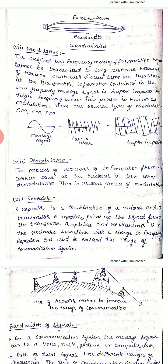The next point is modulation. The reason modulation is needed is that the original signal has quite low frequency and cannot travel long distances. The original low-frequency message or information signal cannot be transmitted over a long distance. For instance, the frequency of a human voice is 20 to 20,000 Hz, but after some distance, the signal loses its strength and amplitude.